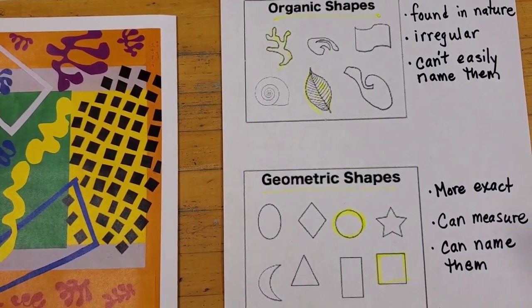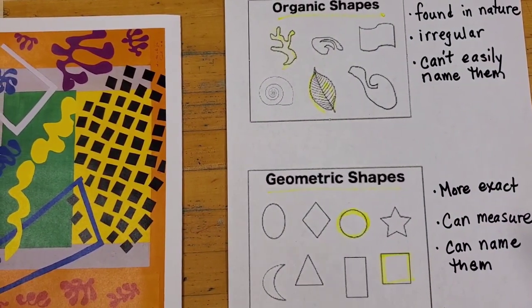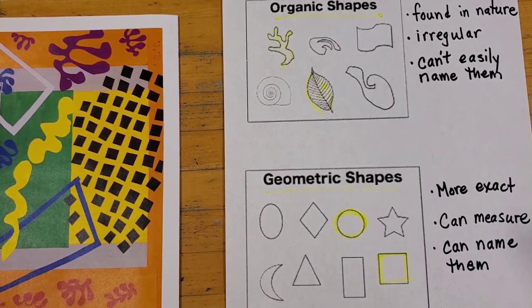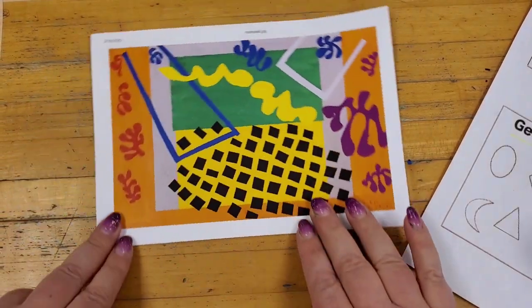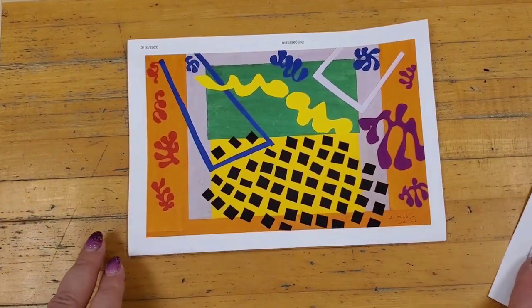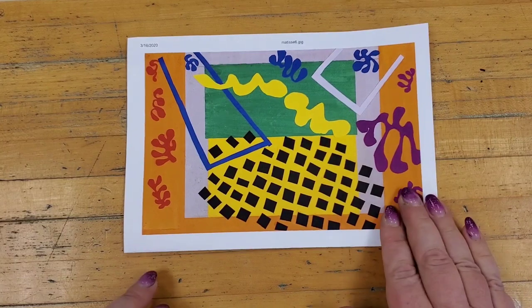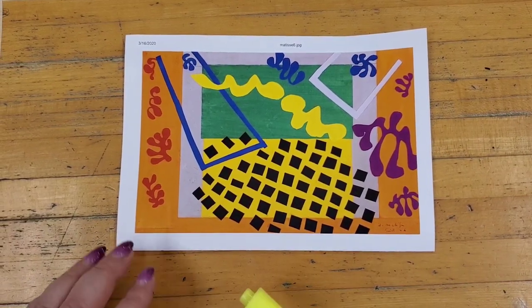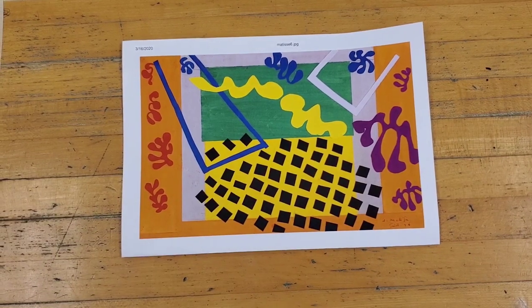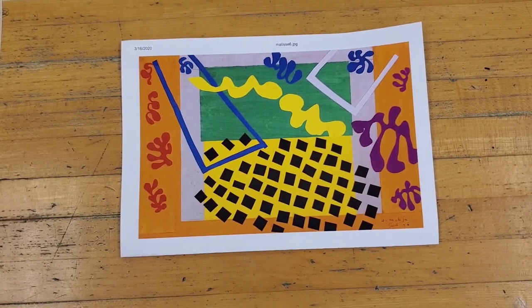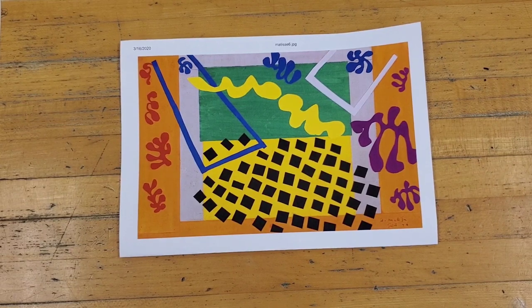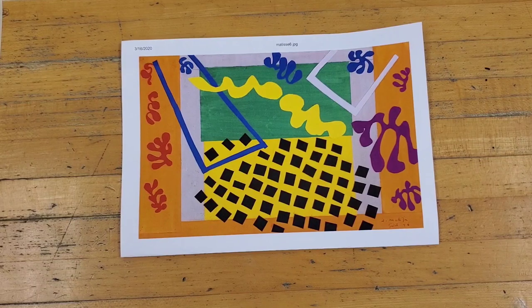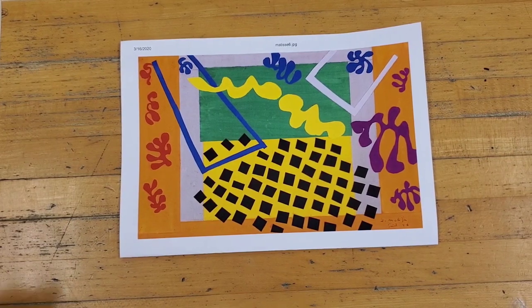So you're going to be doing a shape collage drawing which means you're going to be using different kinds of shapes in a basic drawing and we're going to be inspired today by one of my favorite French artists. His name is Henri Matisse and he was often known for his use of shape and color. He was also known as an artist who painted with scissors because he was able to cut his brightly colored paper into the various shapes and then collage them all together.